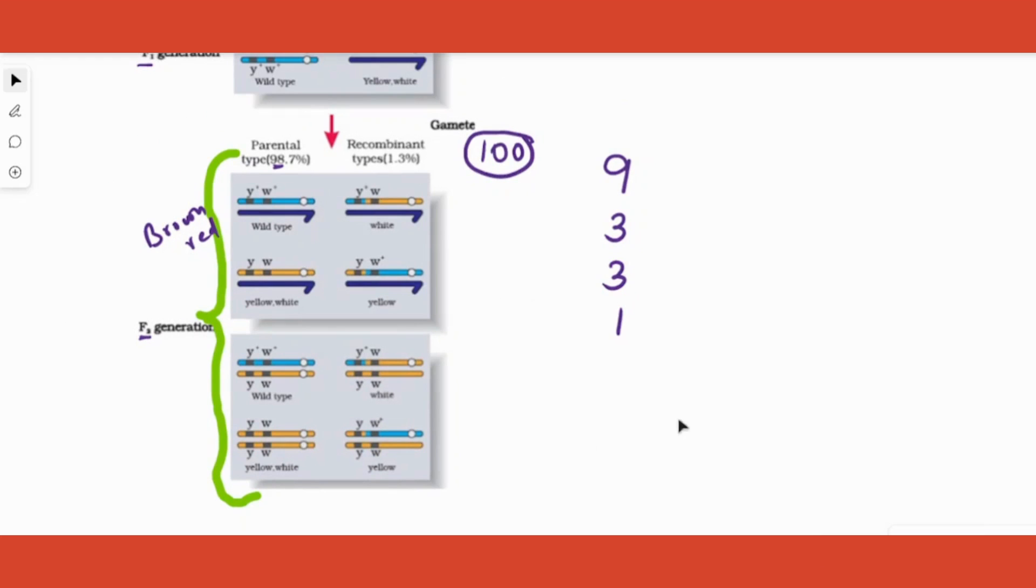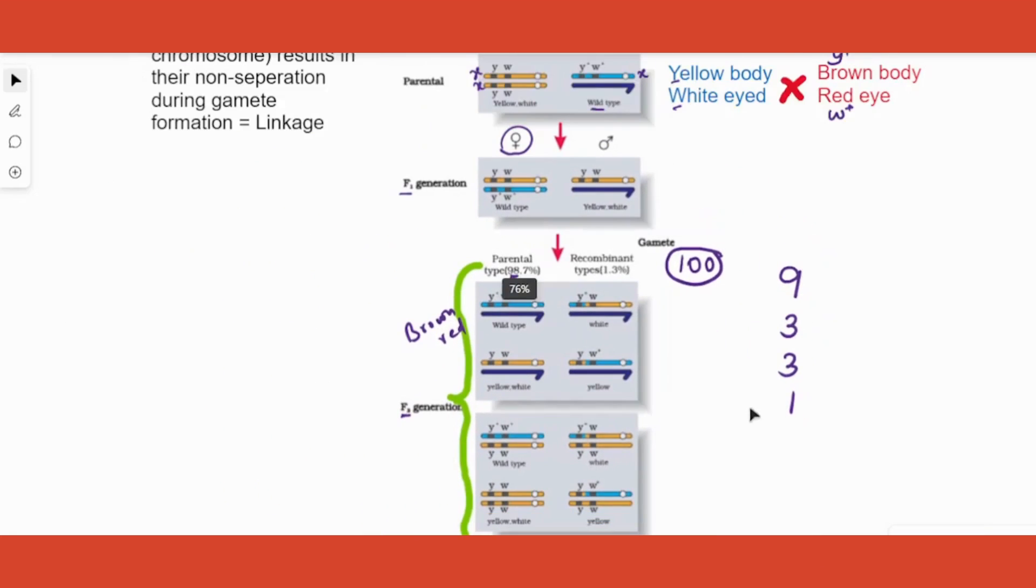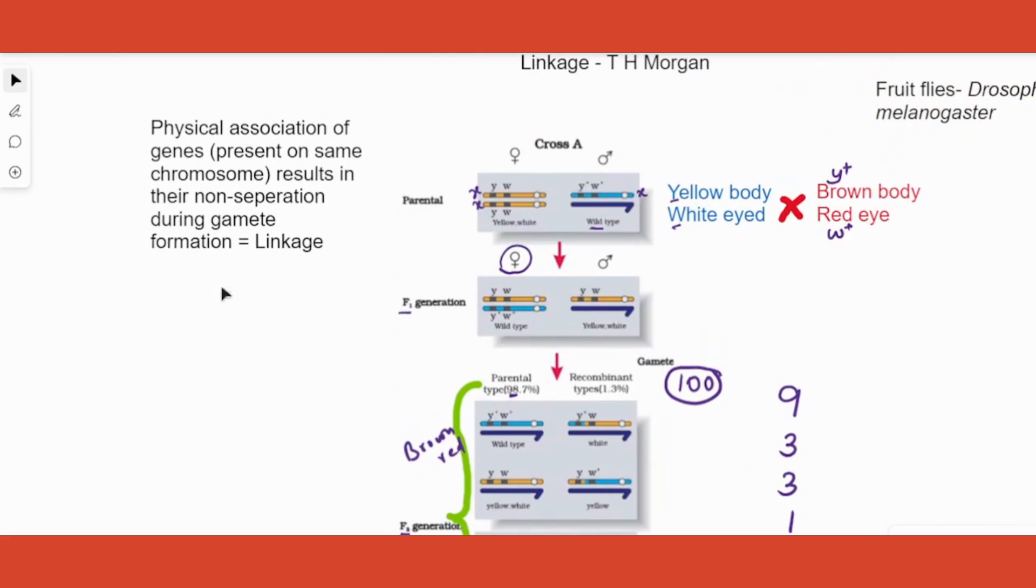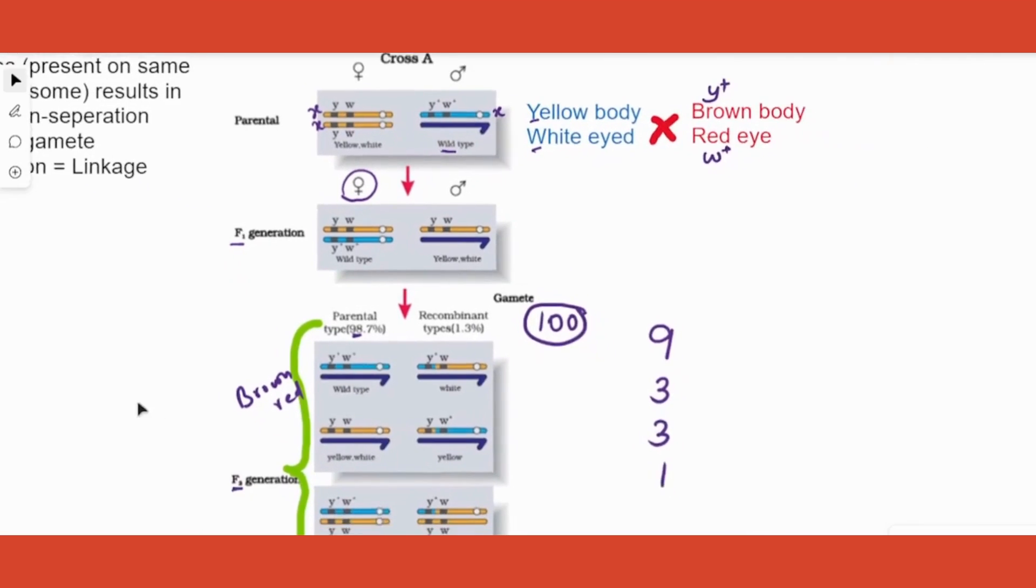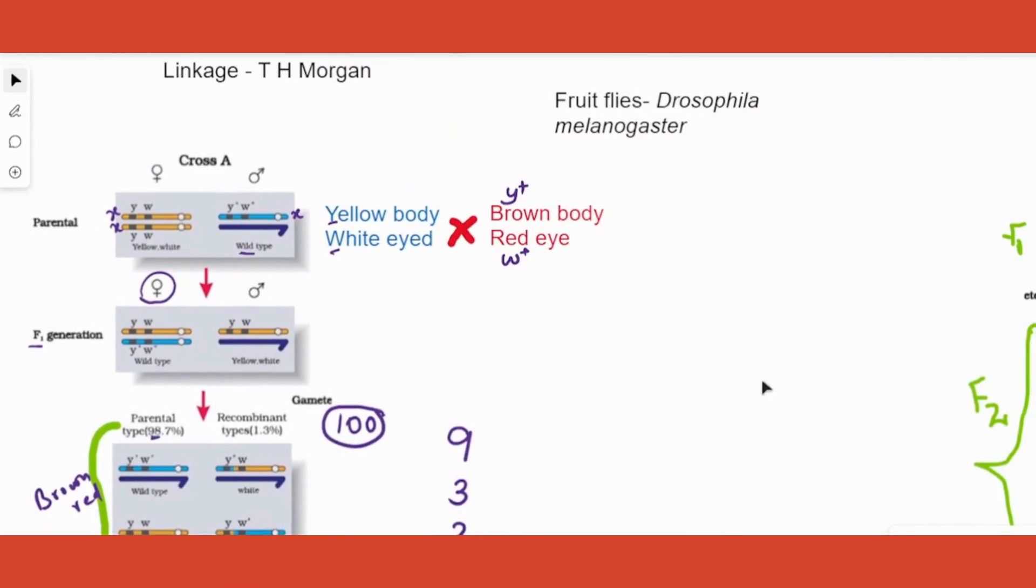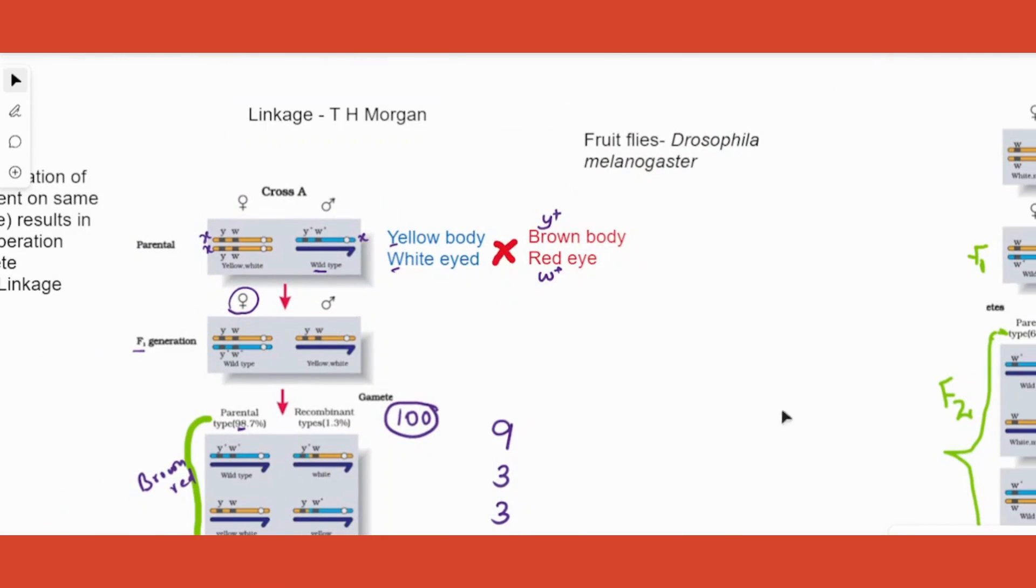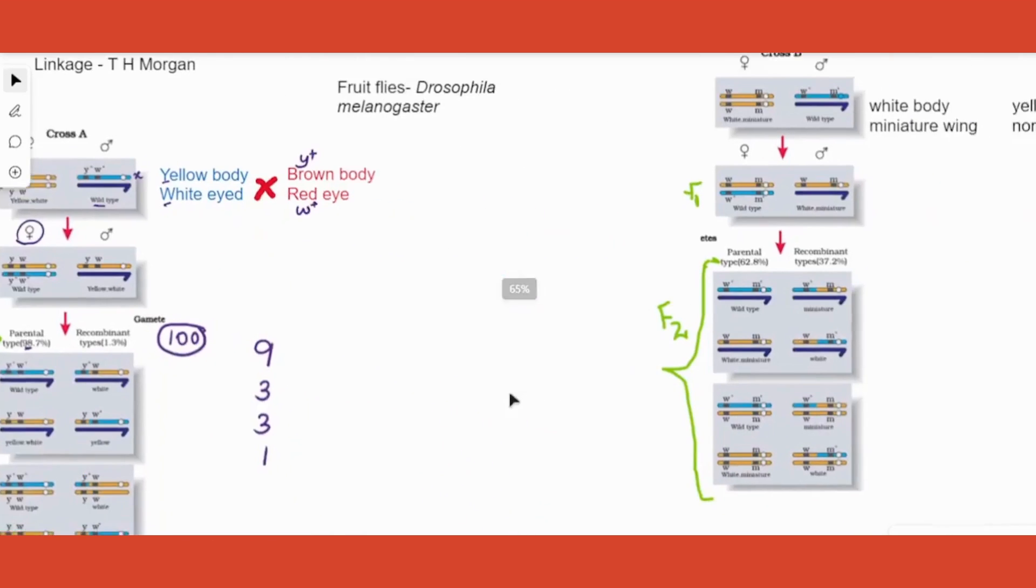Now why is that? This is because of a phenomenon called linkage. What exactly is linkage? Linkage means if two genes are very near to each other on the same chromosome, especially sex chromosome, they will not separate during gamete formation. That is called linkage.